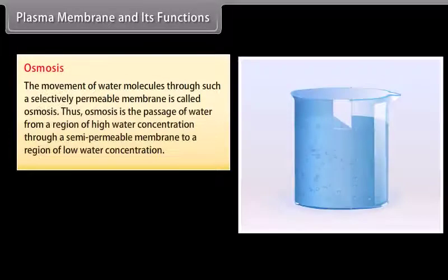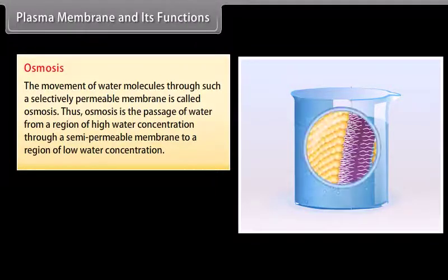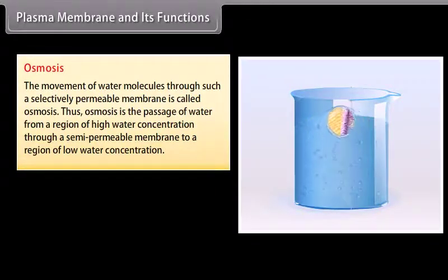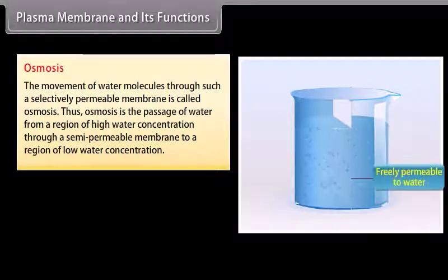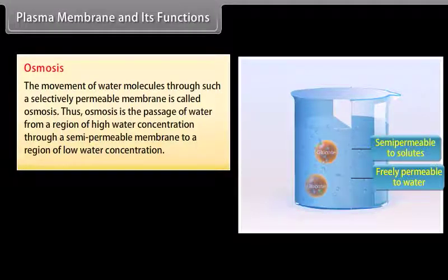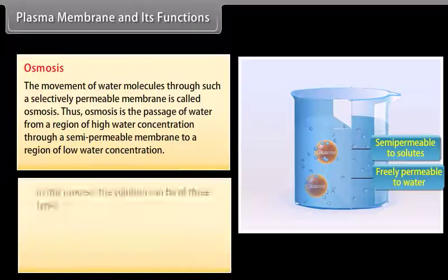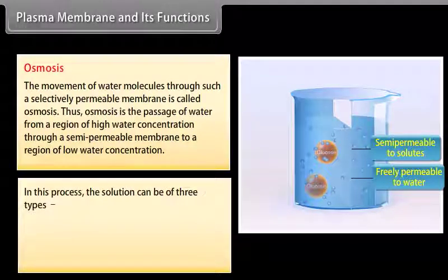Osmosis: The movement of water molecules through a selectively permeable membrane is called osmosis. Osmosis is the passage of water from a region of high water concentration through a semi-permeable membrane to a region of low water concentration. In this process the solution can be of three types.